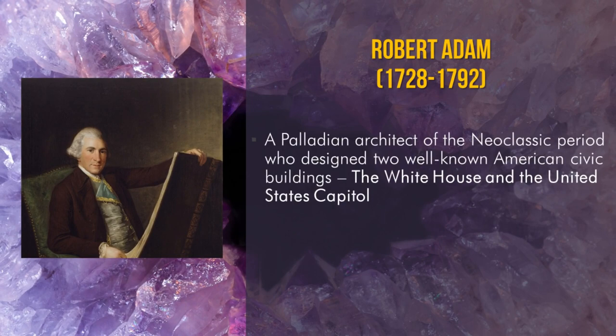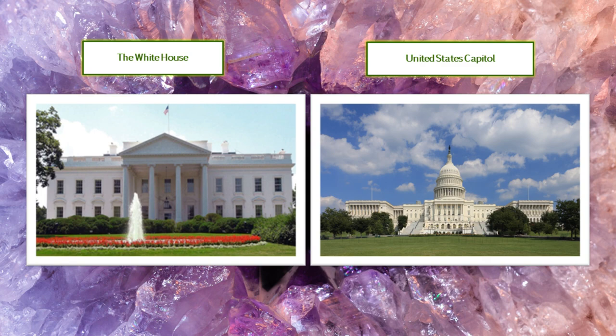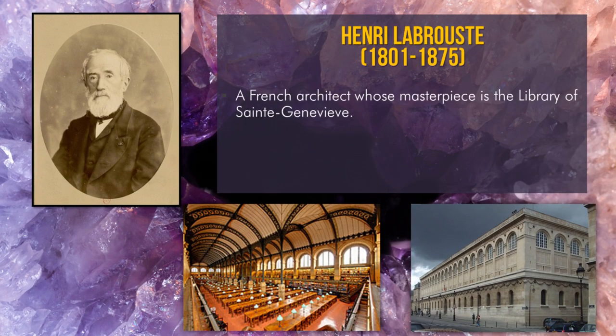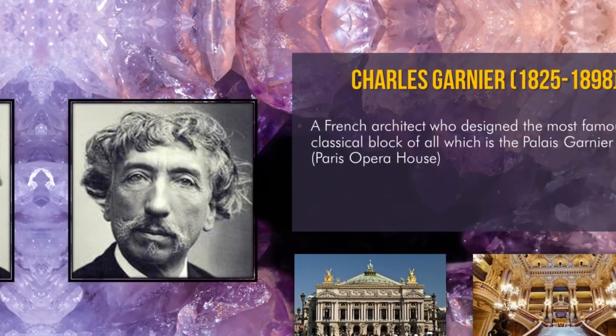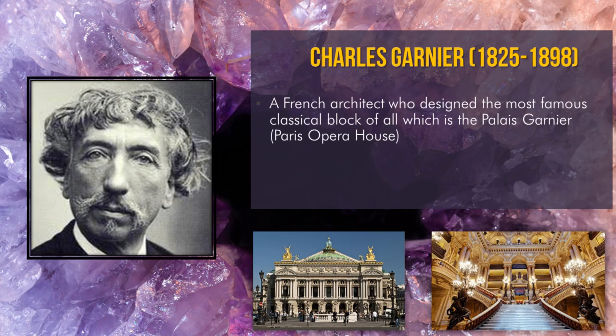The next neoclassical artist is Robert Adam, an American architect of the neoclassical period who designed two well-known American civic buildings: the White House and the United States Capitol. Another famous architect from the neoclassical era is Henry Labrouste, who designed the Library of Saint Geneviève. And lastly, we have Charles Garnier, from 1825 to 1898, a French architect who designed the most famous classical building of all — the Palais Garnier, also known as the Paris Opera House.